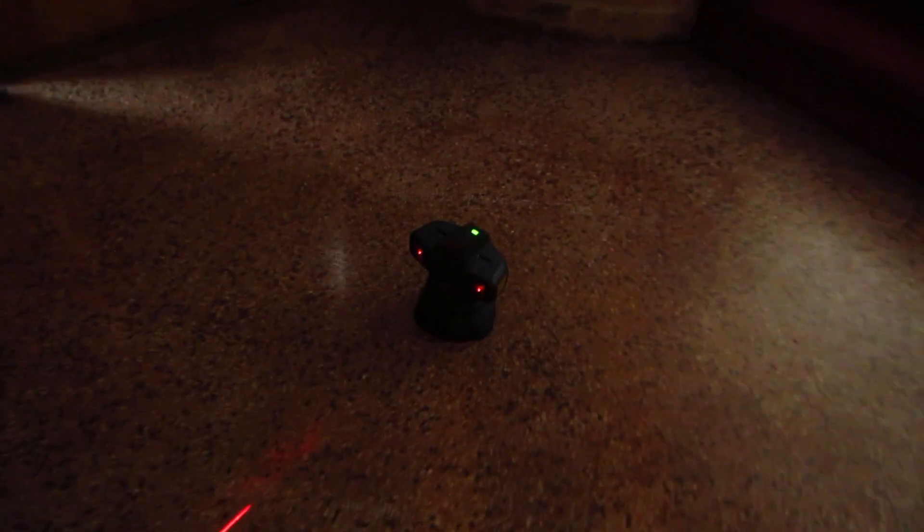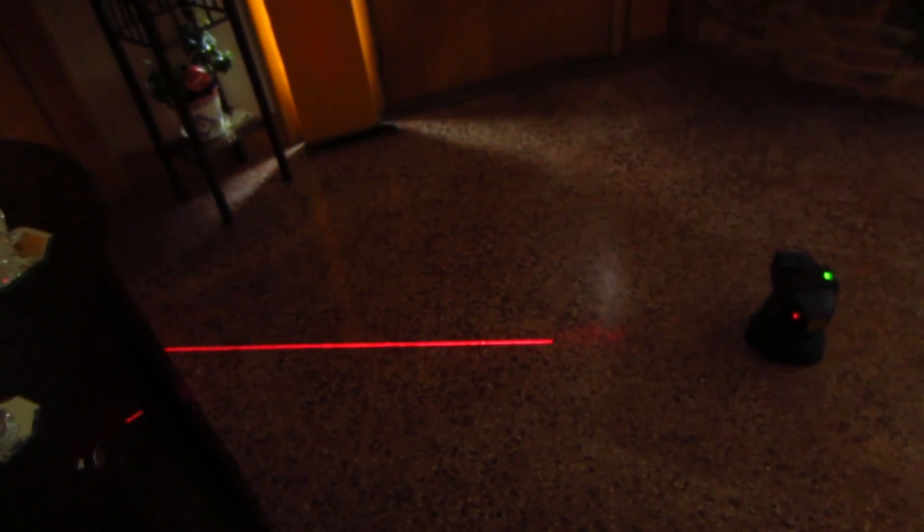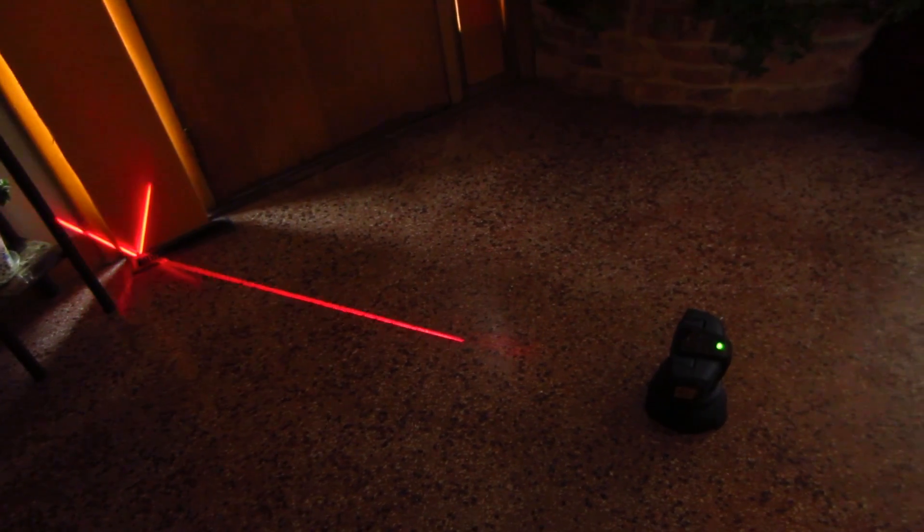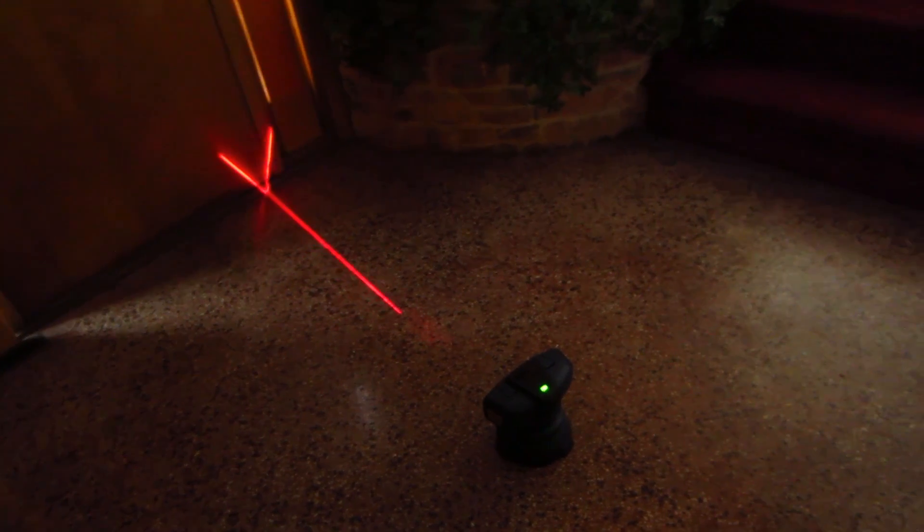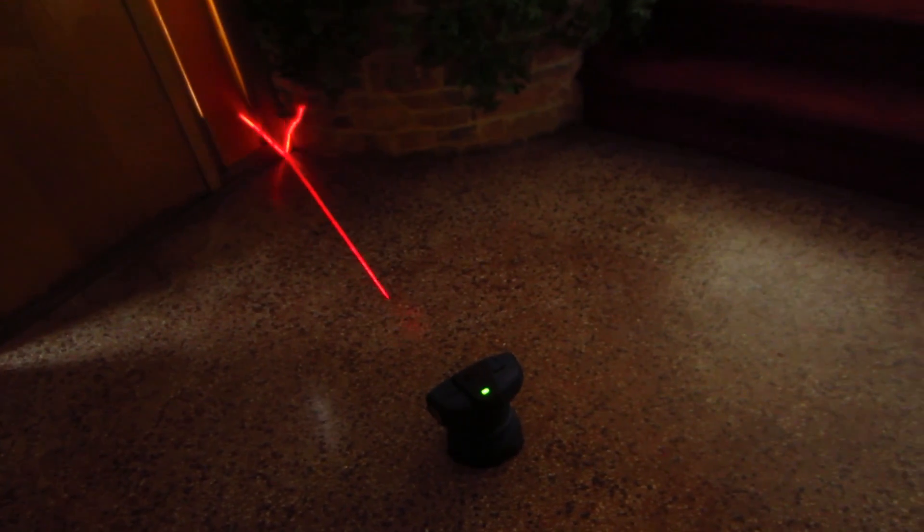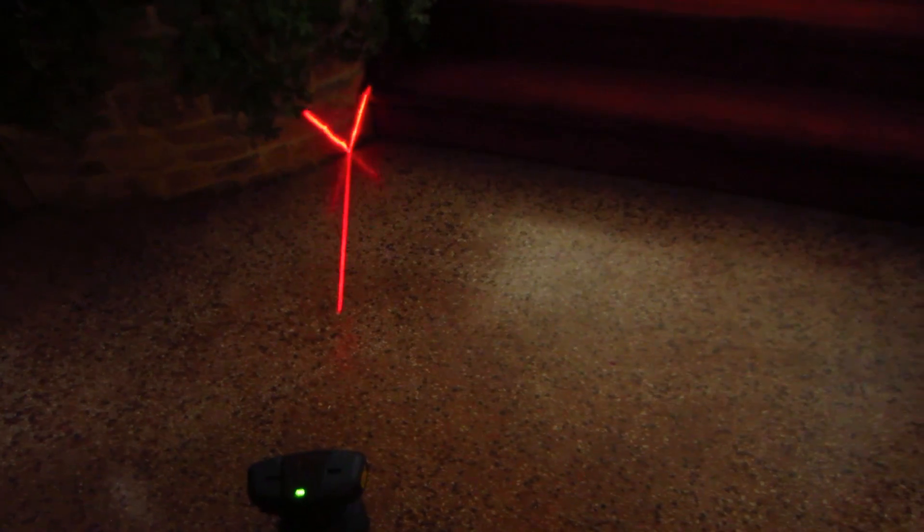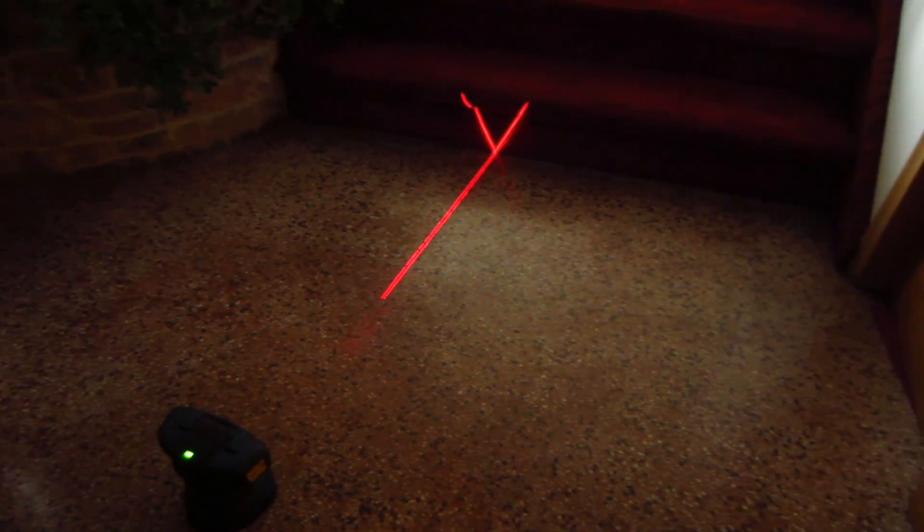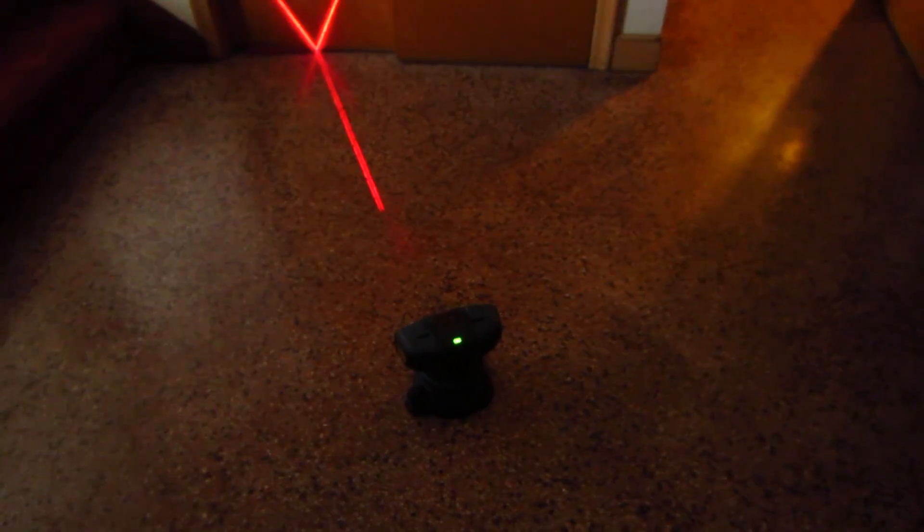So as the machine rotates and the lines diverge from each other, it indicates where the level of the floor is different to our reference point. Now this floor isn't too bad, so it doesn't show up a lot. I'm going to put it in another spot in a few minutes where you're going to see a real big difference in level. So that's basically how this operates.